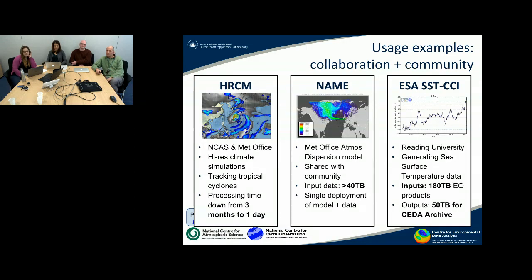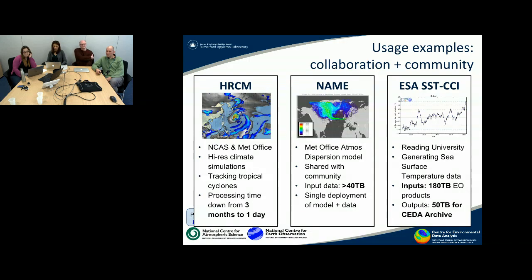The middle panel shows the NAME model — this is a Met Office atmospheric dispersion model. The Met Office has for years shared this with people in the academic community and wider. We found there was a real advantage in using Jasmine because they could bring over 40 terabytes of input data onto the system and deploy a single version of the model so that people from a variety of different locations could access the same resources.